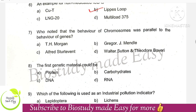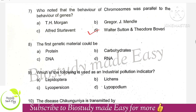Who noted that the behavior of chromosomes was parallel to the behavior of genes? The right option is Walter Sutton and Theodore Boveri. The first genetic material — there can be confusion here as people often say DNA, but the right option is RNA. RNA was the first genetic material.